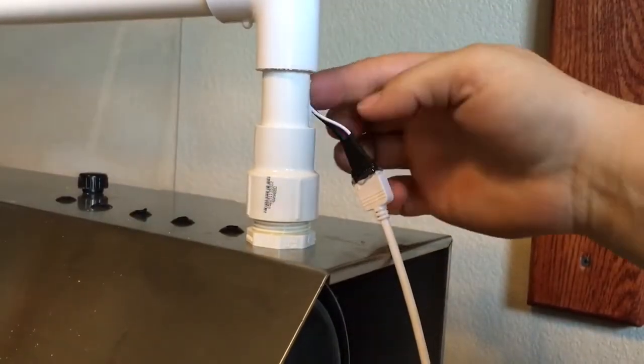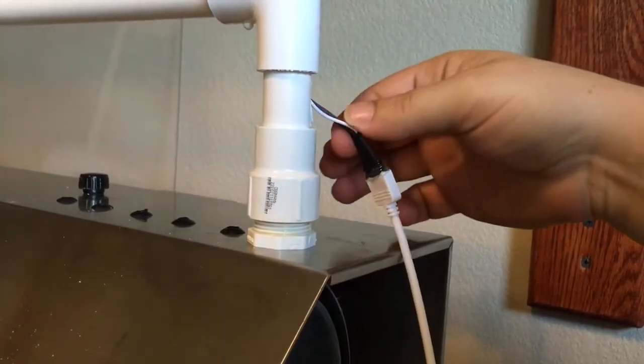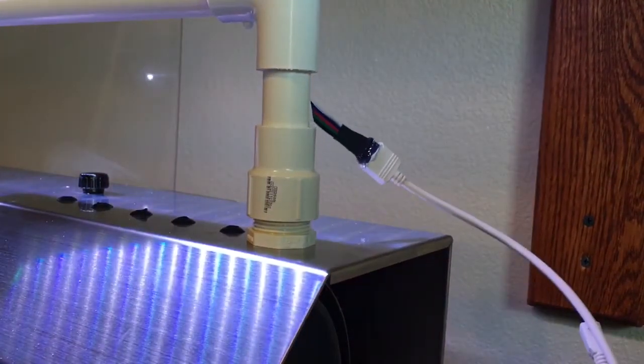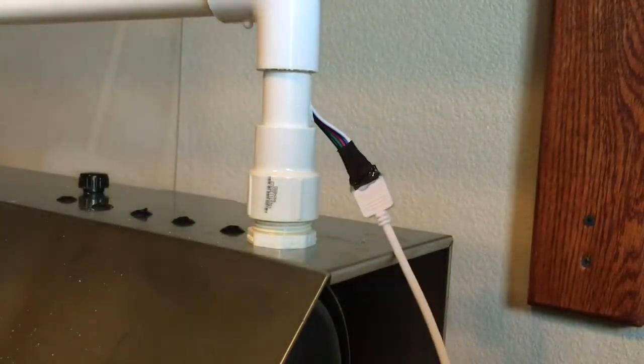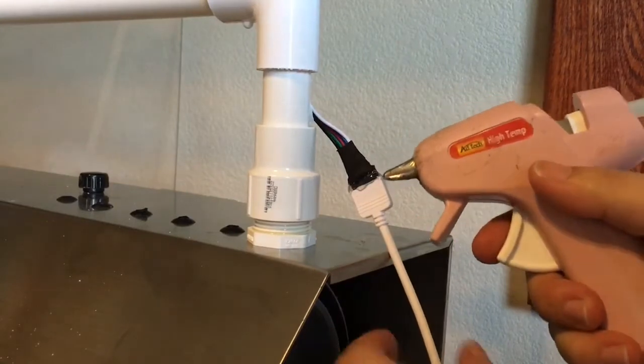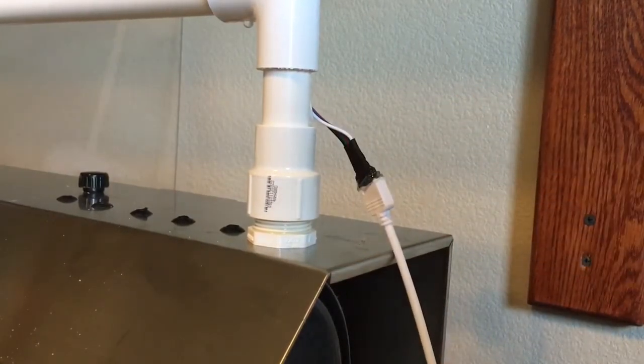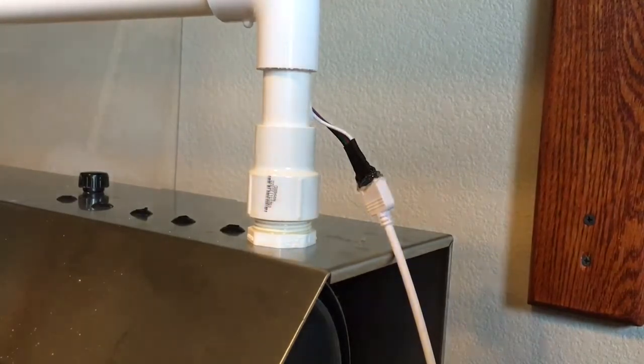Once you have your hole cut in the back, go ahead and lace everything through. Test it out to make sure you have it plugged in the right direction. And then take your hot glue gun or whatever waterproof glue you're using. Go around the whole thing really good. This by no means will be waterproof, but it'll help it be a little more water resistant.